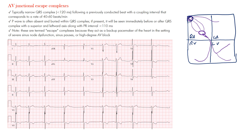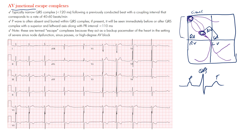The SA node is the sinoatrial node. The AV node area is called the AV nodal junction, and that's where AV junctional rhythms originate from. Because the impulse starts here rather than at the SA node, there tends to be no P wave preceding the QRS complex — the P wave represents atrial contraction, which is not present when the impulse starts at the AV junction.